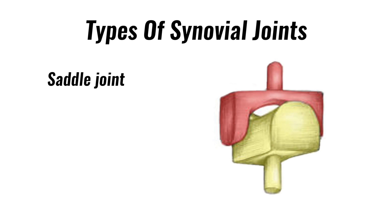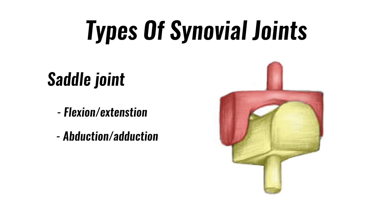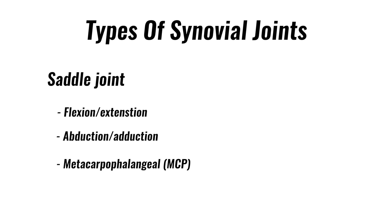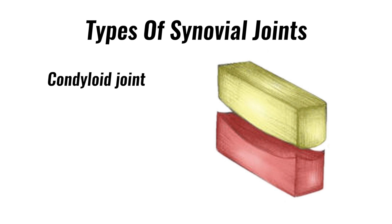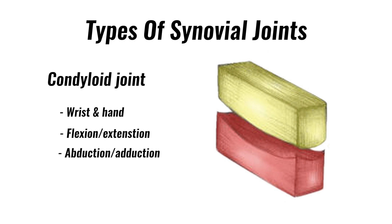A saddle joint allows flexion, extension, adduction, and abduction. The MCP joint at the base of the thumb is an example of a saddle joint. Condyloid joints are found in the wrist and hand. They also allow flexion, extension, adduction, and abduction.